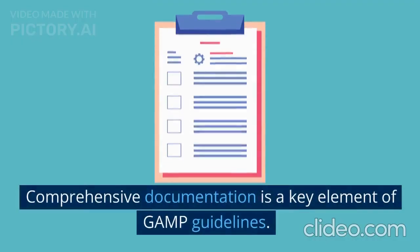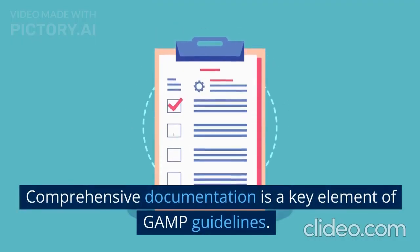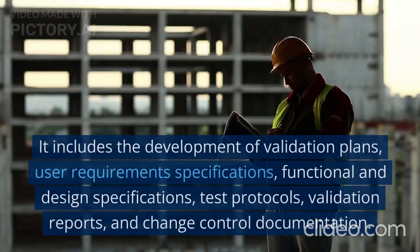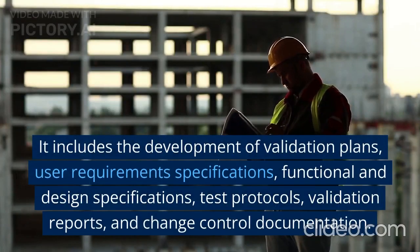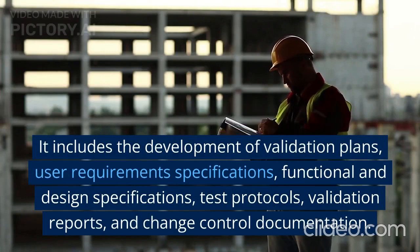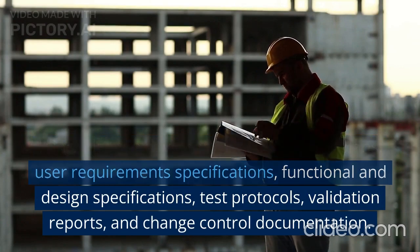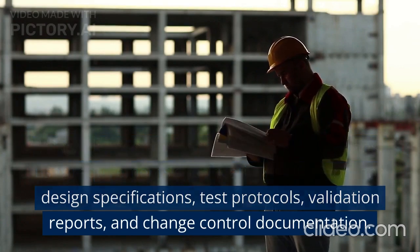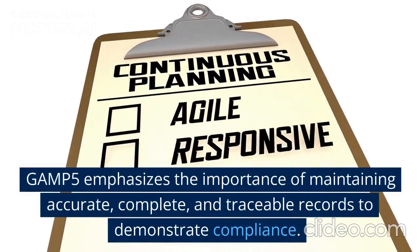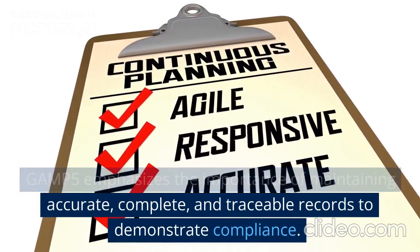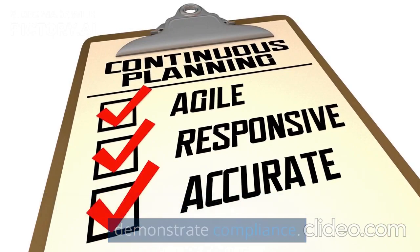Documentation: Comprehensive documentation is a key element of GAMP guidelines. It includes the development of validation plans, user requirement specifications, functional and design specifications, test protocols, validation reports, and change control documentation. GAMP5 emphasizes the importance of maintaining accurate, complete, and traceable records to demonstrate compliance.